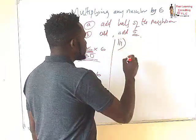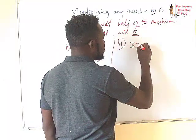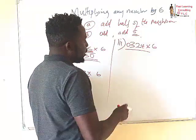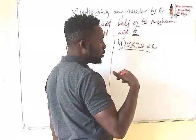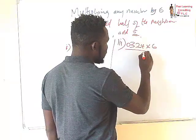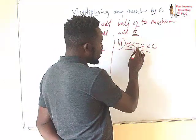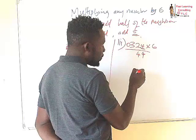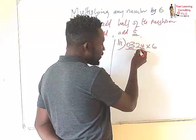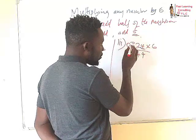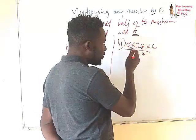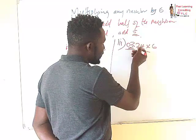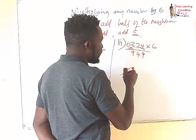What do you think about 324 multiplied by 6? We add a 0 here. 4 doesn't have a neighbor, so we leave 4 as it is. Then 2: add half of the neighbor, which gives us 4. Then 3: add half of the neighbor, which is 1. Since 3 is an odd number, we also add 5. So we have 4 plus 5 plus 1, which gives us 9 — carry 1.